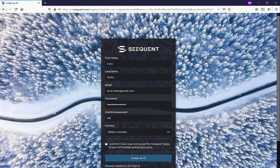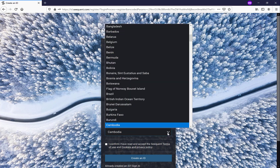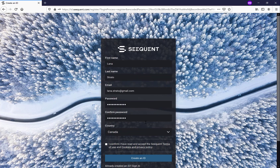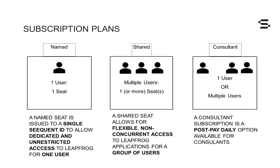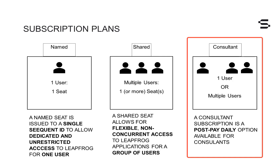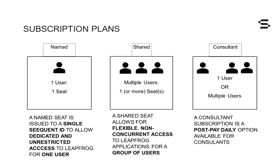If you or your organization have purchased a LeapFrog subscription, an entitlement will be applied to your Sequent ID, allowing you to access the relevant products and extensions. There are different LeapFrog subscription plans available, including named seat, shared seat, or consultant seat, plus or minus possible extensions.